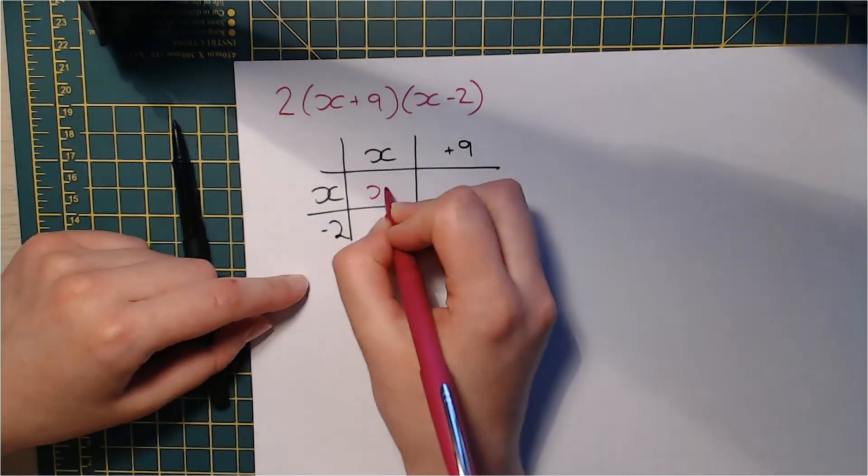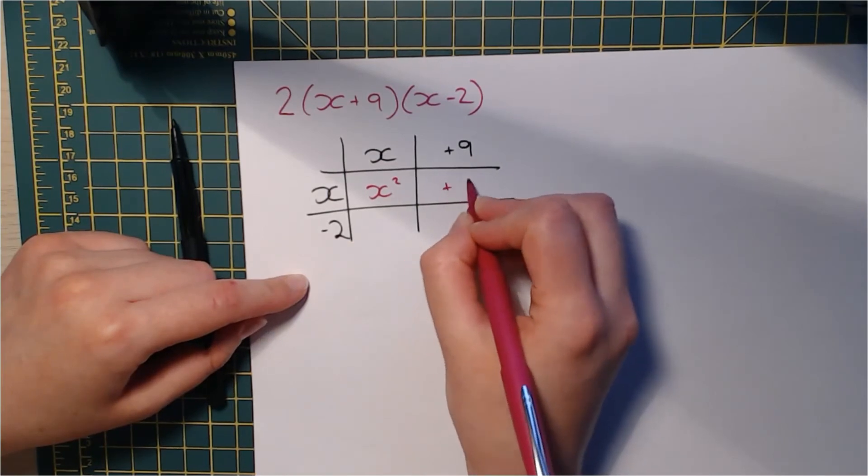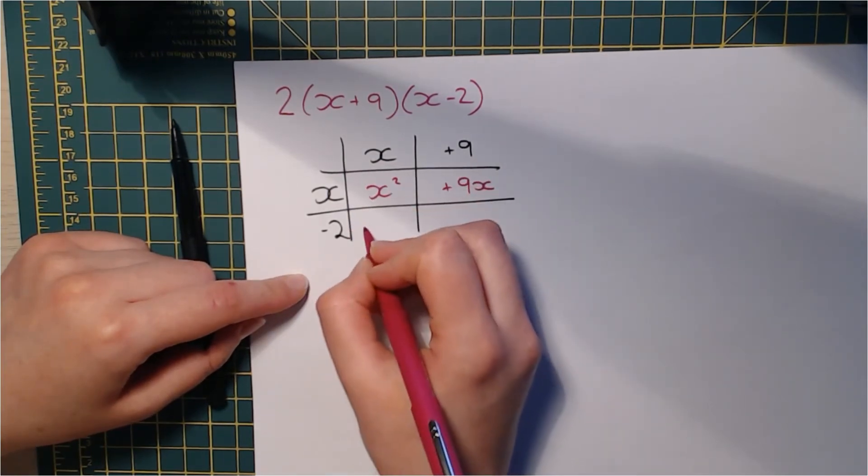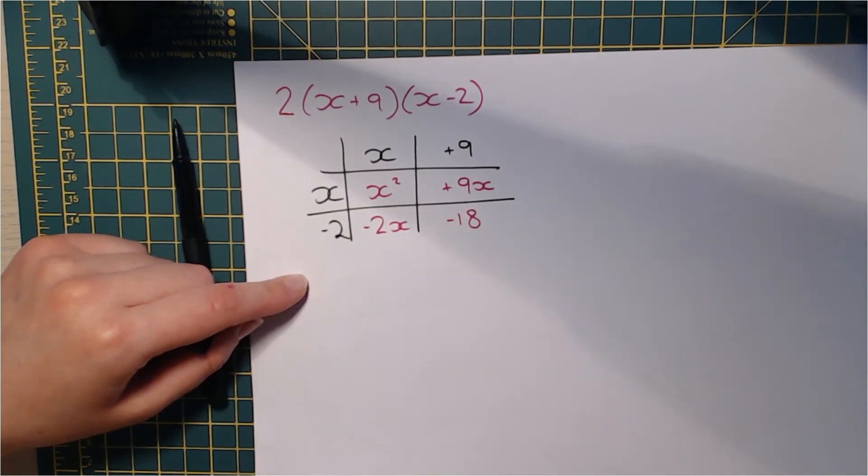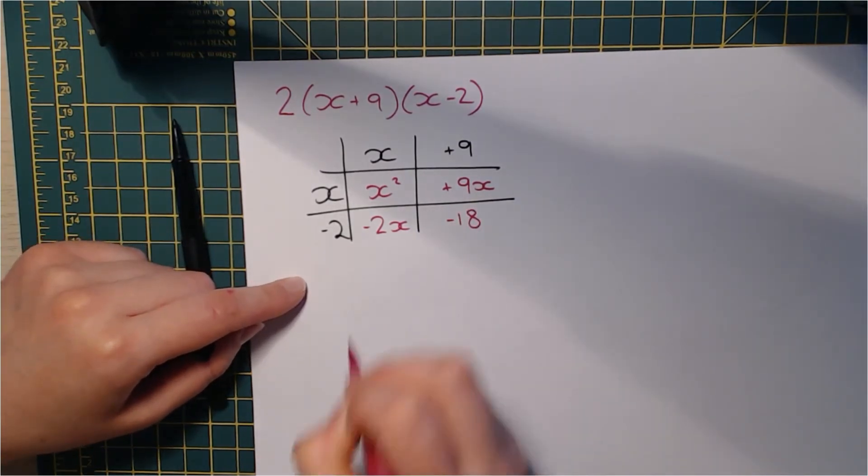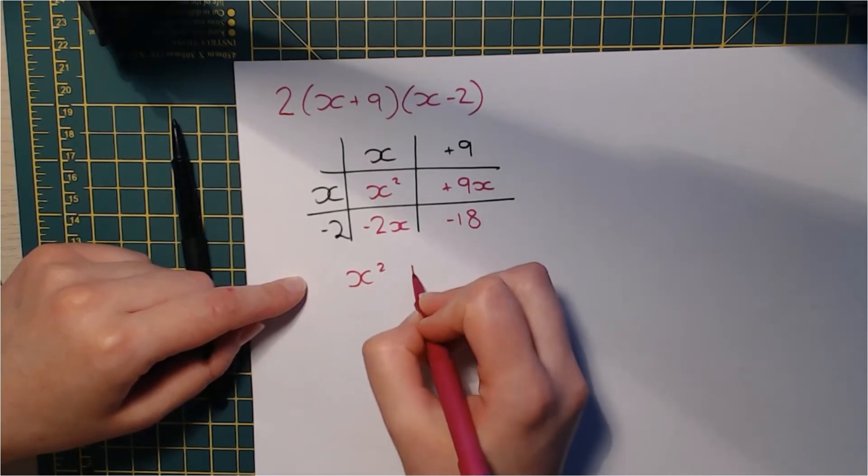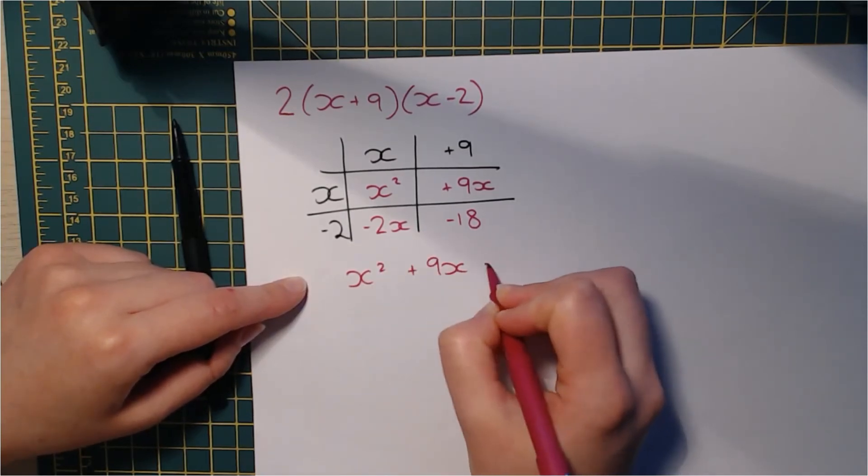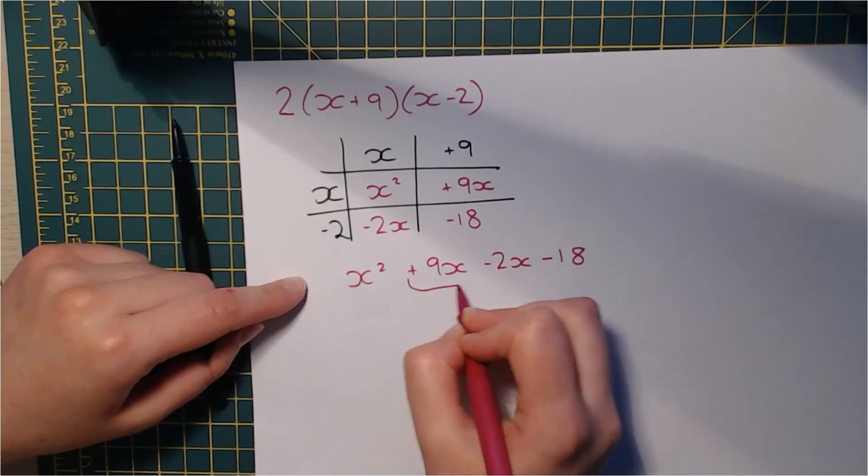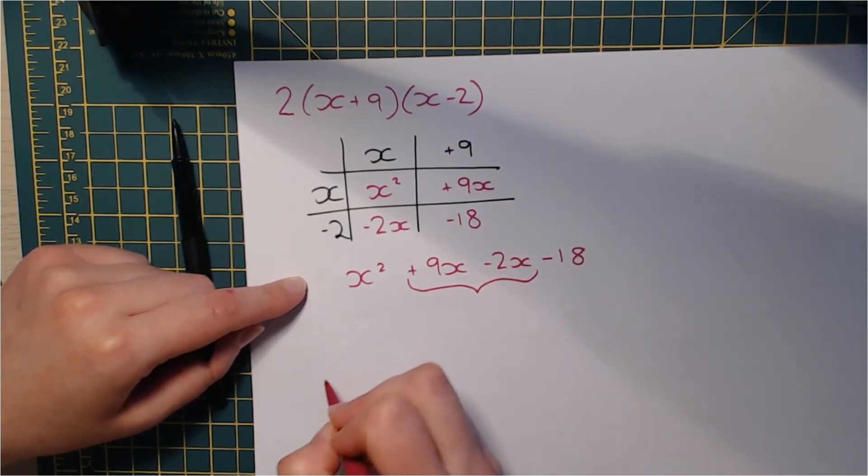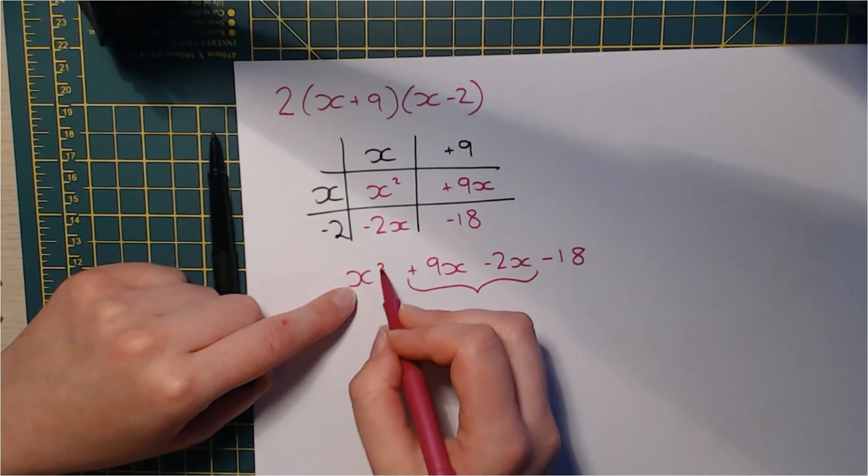We're going to get x squared, positive 9x, negative 2x, negative 18. And then we're going to write them out. So we're going to get x squared plus 9x, subtract 2x, subtract 18. Simplify here because these are both x's there. Again, don't mix it up with the x squared. That's something different.